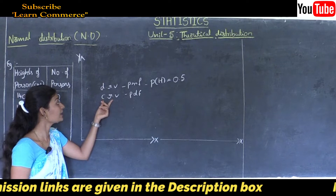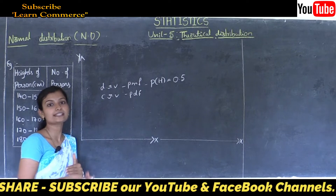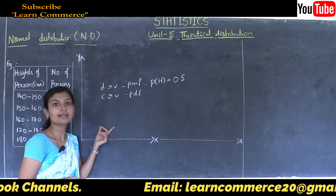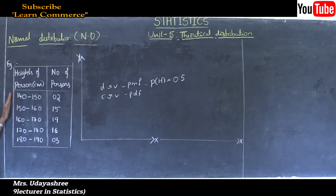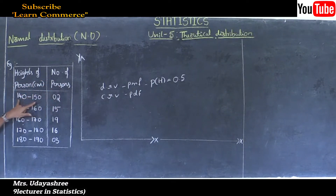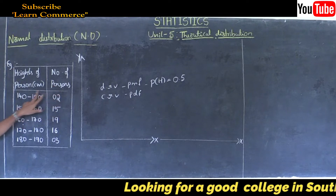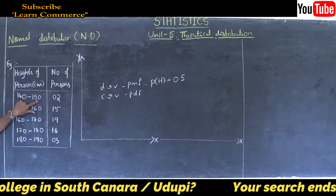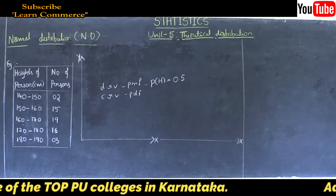For continuous data, we cannot point towards the exact probability of an event. Therefore, we can estimate the frequency curve under the probability distribution. For example, here I have taken the heights of persons in centimeters and the number of persons. The first observation is 140 to 150 centimeters, where 2 persons have heights in that range. We don't know the exact height of these two persons.